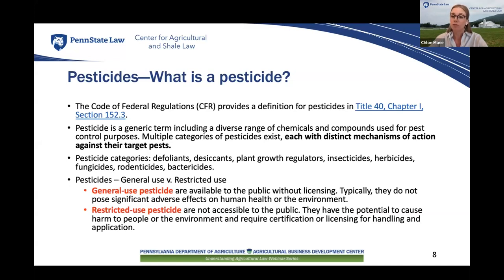There is a difference between general use and restricted use pesticides. General use pesticides are available to the general public at retail garden stores and do not require a license to purchase or use. A good example of general use pesticides includes Roundup products. Restricted use pesticides have the potential to harm people and the environment, and they are only available to certified applicators.